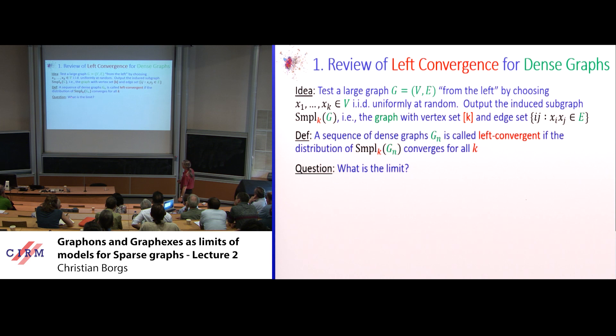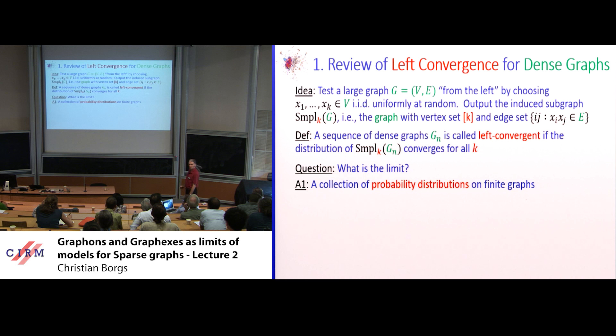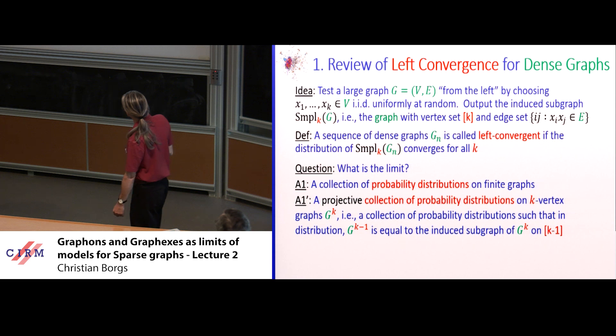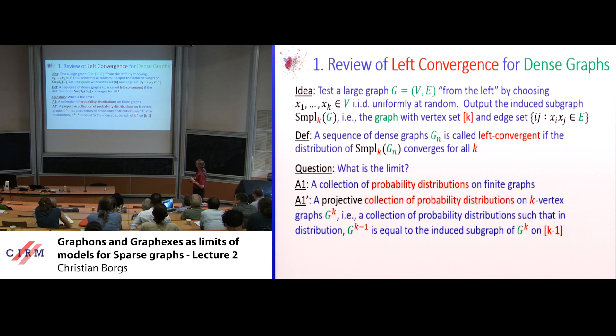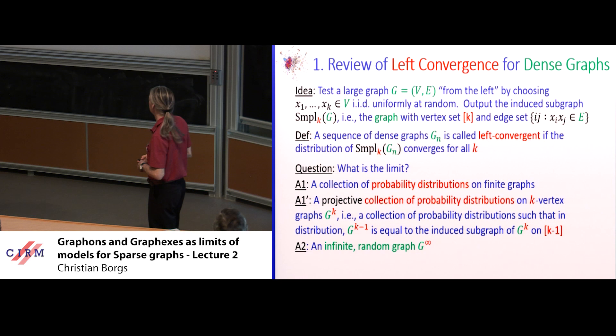What is the limit? Very naturally, the limit is just a collection of probability distributions on finite graphs. If you look more precisely, you see it's projective: if you look at the graph on k vertices and remove one, the others are still chosen uniformly at random, so you get the object on k minus one vertices. This is called a projective collection. By Kolmogorov's theorem, you can send k to infinity and get an infinite random graph. So the limit of a sequence of deterministic graphs is an infinite random graph, described by an infinite random matrix — a random array.